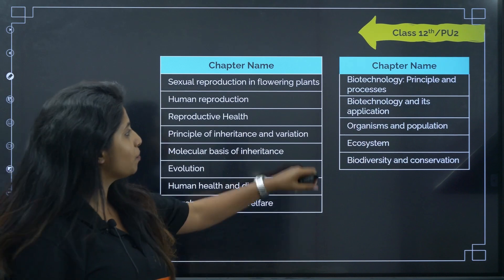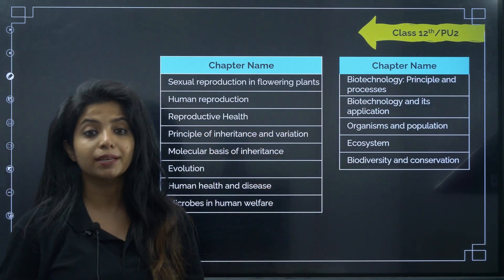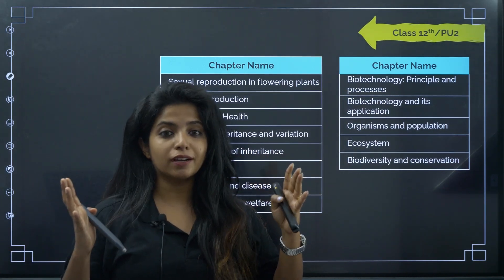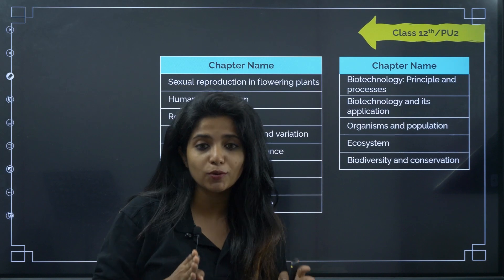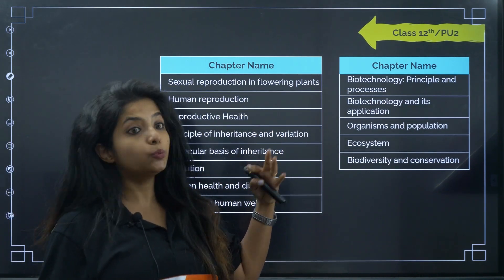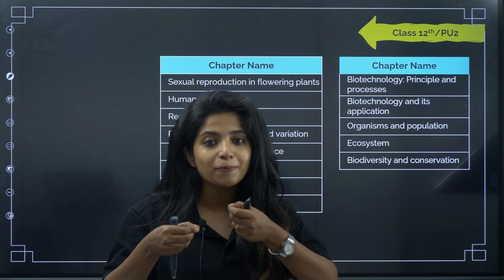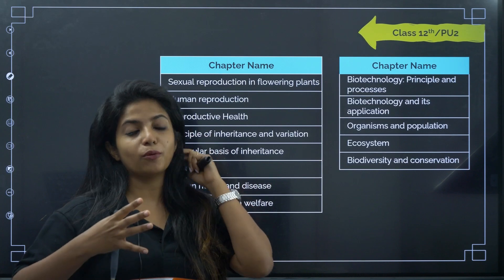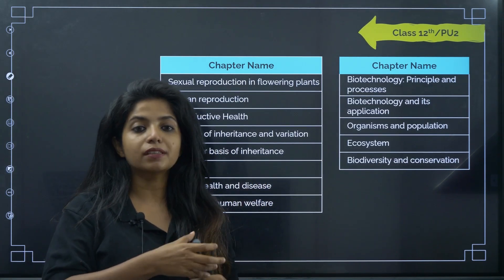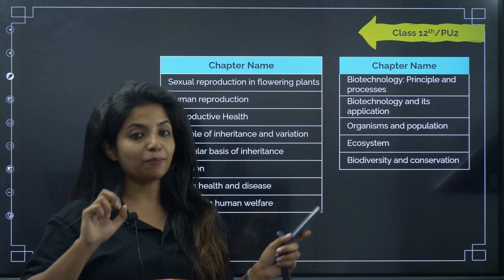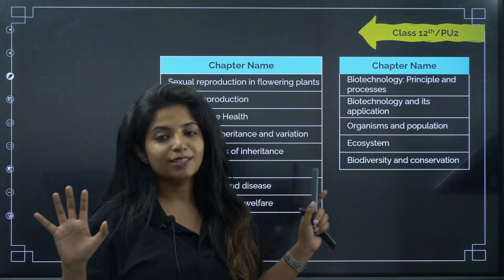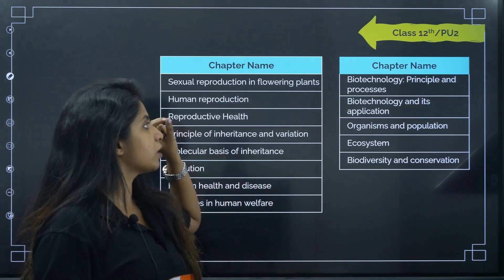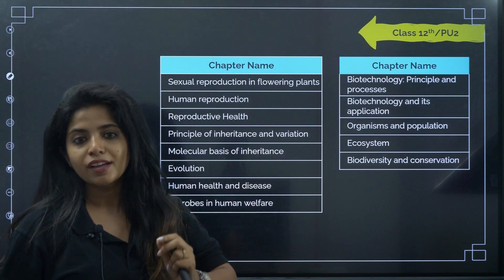There are also chapters starting from biotechnology through biodiversity — biotechnology is something new. When I used to study, we had a separate book for biotech. It's really interesting because you are dealing with the genetics of organisms — that's how different medicines and transgenic animals are made. All of these are covered in your 12th grade. If you count all the chapters, 12th grade has 13 chapters altogether.